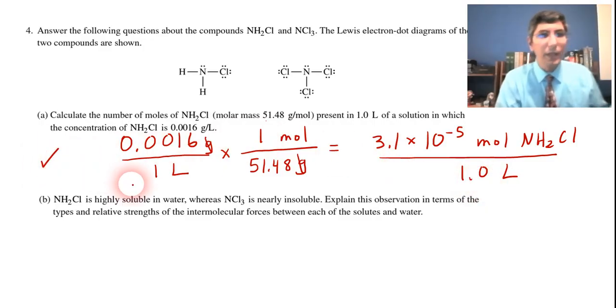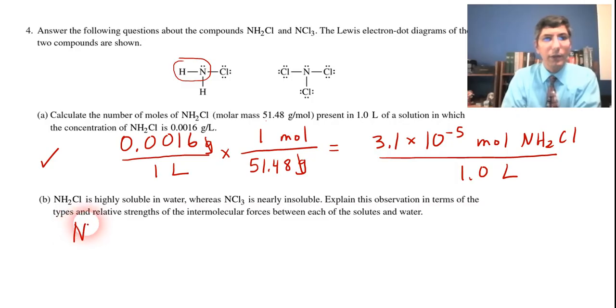Now part B tells us about the relative solubility of these substances in water. It says NH2Cl is very soluble in water, whereas NCl3 is not very soluble at all. And it wants an explanation in terms of types and relative strengths of the intermolecular forces between each of the solutes and water. So let's start with NH2Cl. What you want to look for is, you might notice that there is an NH bond right here.